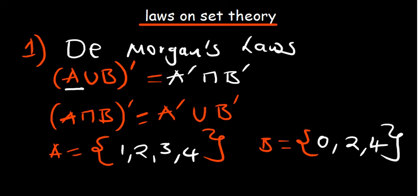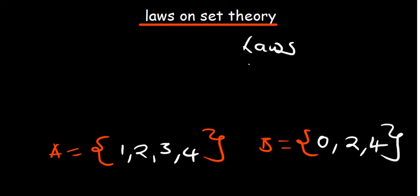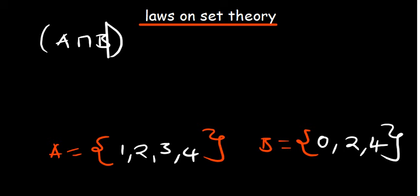So now let's say they ask you to prove De Morgan's laws. Starting with the first one, in the case where we have (A intersection B) complement, this becomes A complement union B complement. When confirming these laws, look at what is inside the brackets.